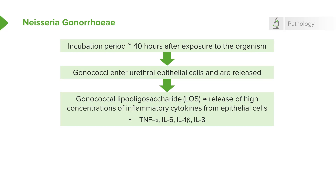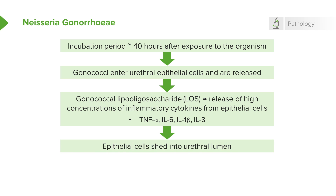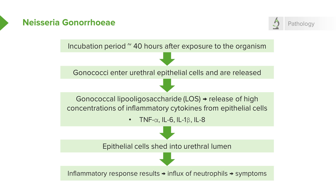These cytokines include tumor necrosis factor alpha, IL-6, IL-1 beta, and IL-8. And all of this causes not only the urethral cells to be shed into the lumen, but numerous white blood cells — and that's why in gonorrhea the discharge is grossly purulent, full of white cells.